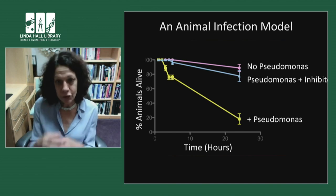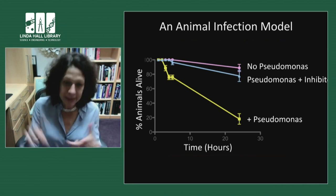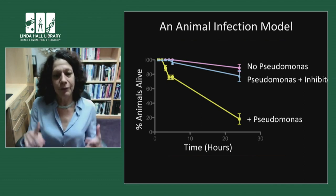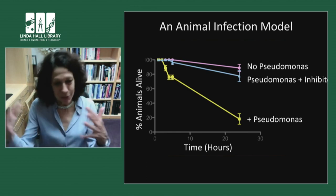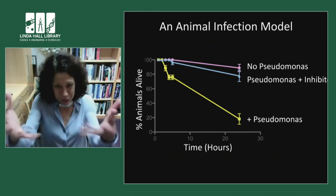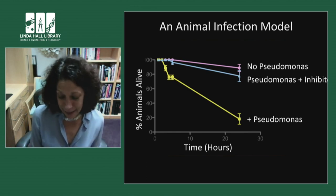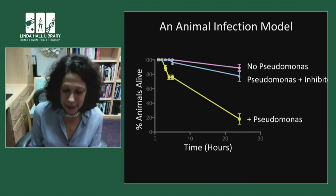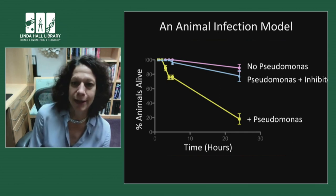Does it work? We have an animal infection model for Pseudomonas. If we don't infect the animals, all are alive a day later. If we give a Pseudomonas infection, it's lethal — roughly a day later, nearly all the animals are dead. But if we give the Pseudomonas infection and also give the inhibitor — that anti-quorum sensing molecule — the animals don't die. So we can shut down quorum sensing and stop the infection. To be clear: this is not a medicine yet, it's a lead molecule, a proof-of-principle experiment giving us confidence there's merit to this new approach of treating infections by shutting down bacterial communication.